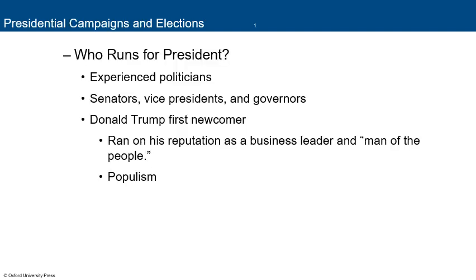Who runs for president? Experienced politicians tend to run — senators, vice presidents, and governors. Donald Trump was something rather new: a newcomer who had never held or run for elective office. He ran on his reputation as a business leader and a man of the people, even though he's a multibillionaire. Populism — running as a man of the people, appearing to represent the common man — has grown over the last 10 to 20 years, which is one reason Trump was able to get elected in 2016.